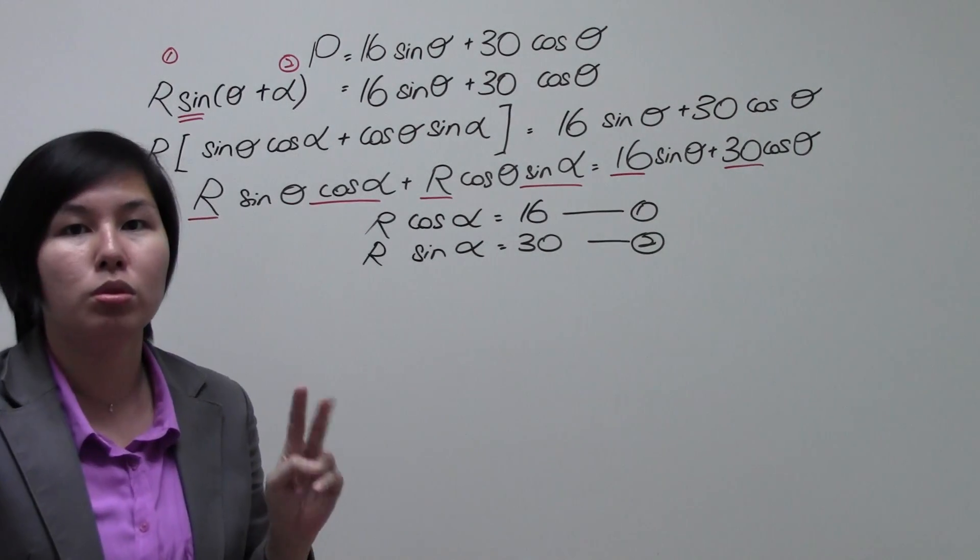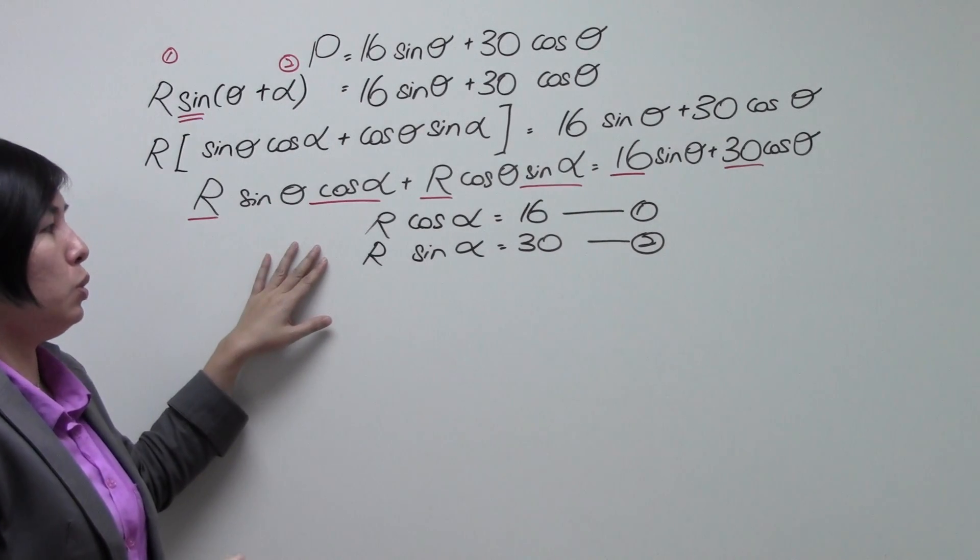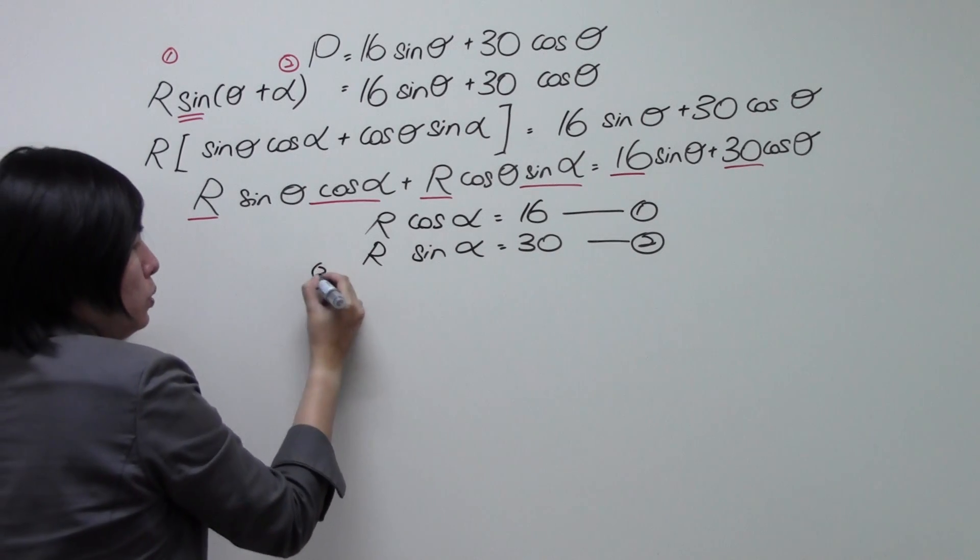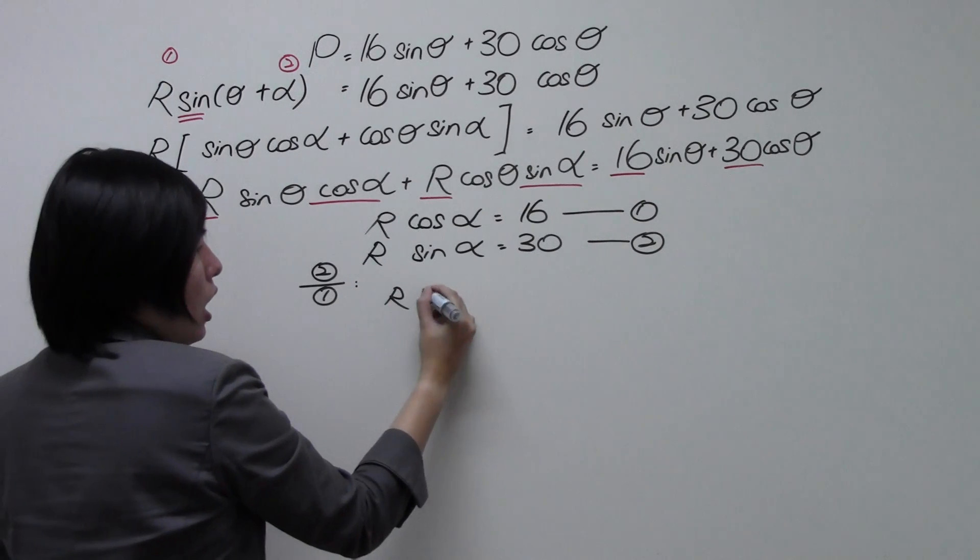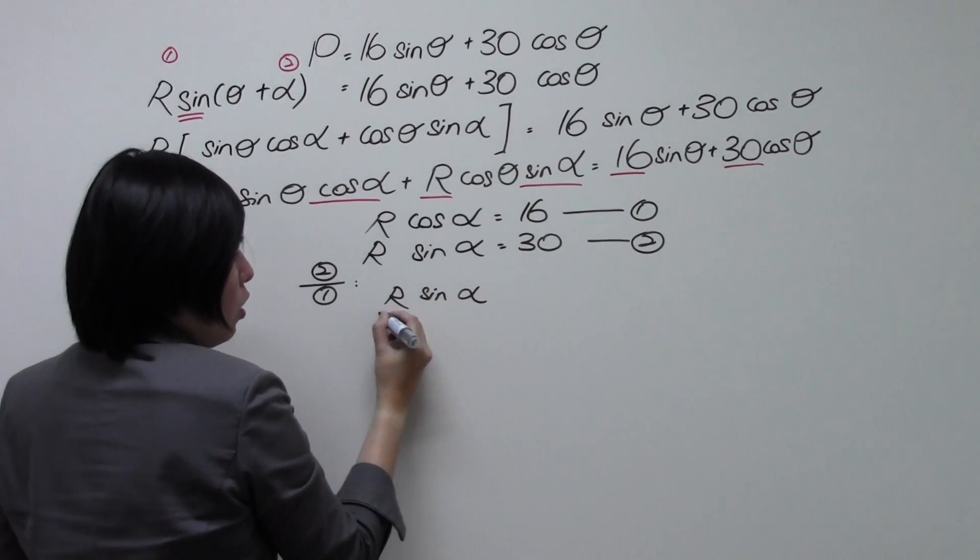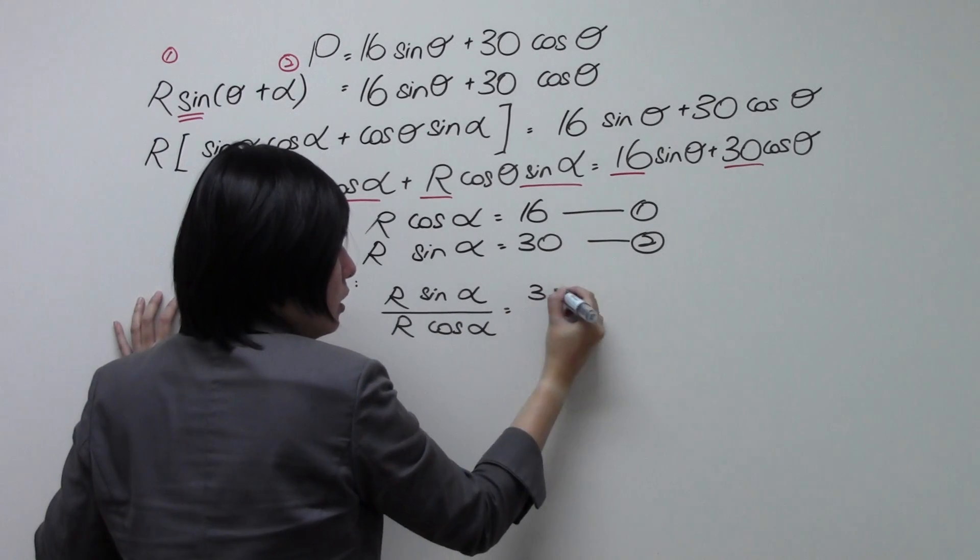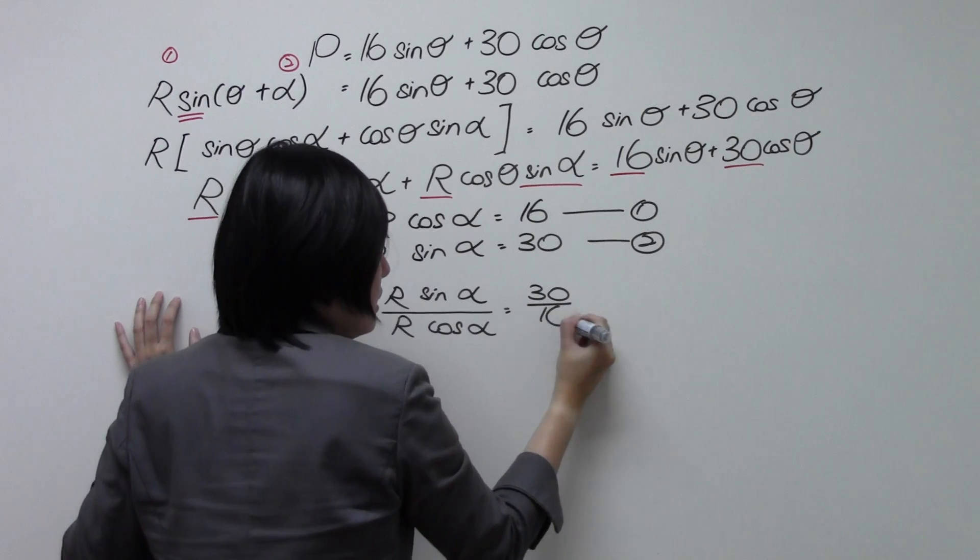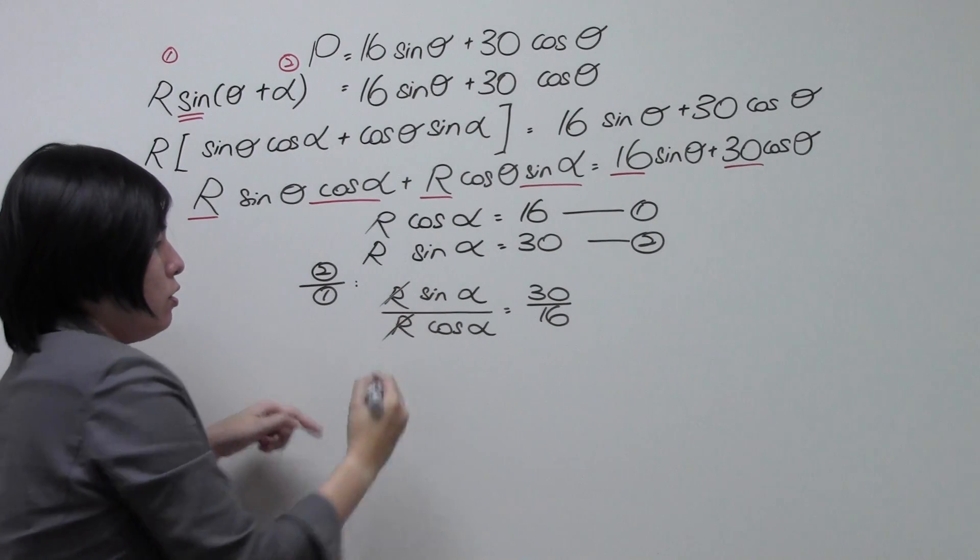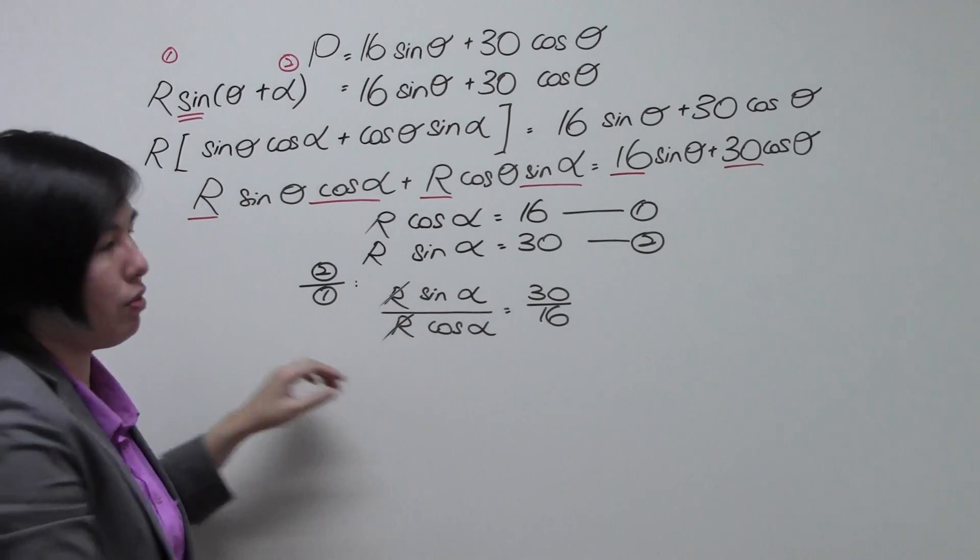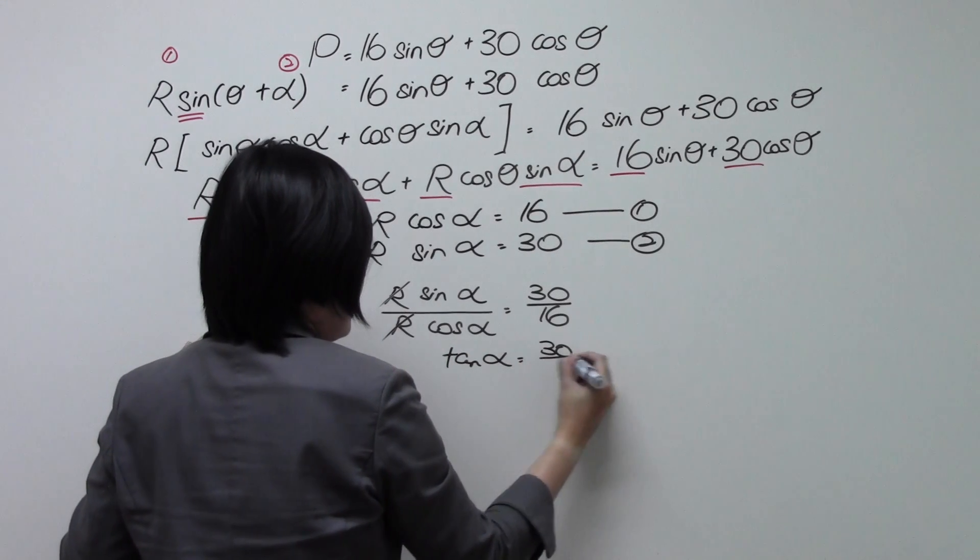2 unknown, 2 equation. We can solve simultaneously. So what we're going to do next is, I'm going to be taking equation 2, divide by equation 1, which will give us R sine alpha over R cosine alpha equals to 30 over 16. So then you can cancel off your R. Sine alpha over cosine alpha. That will give us tangent alpha, which is equal to 30 over 16.